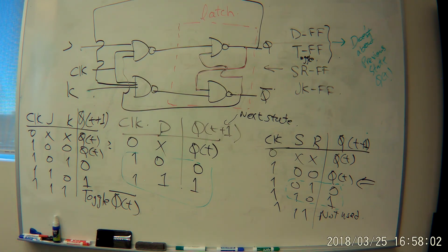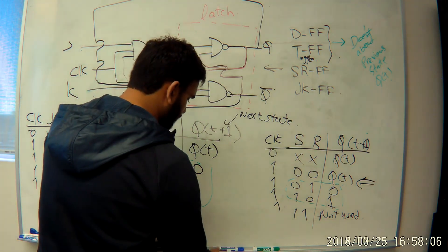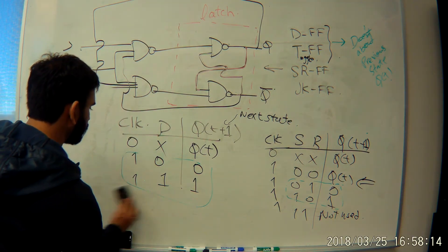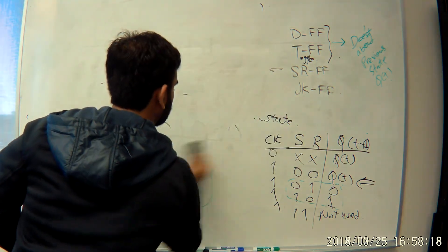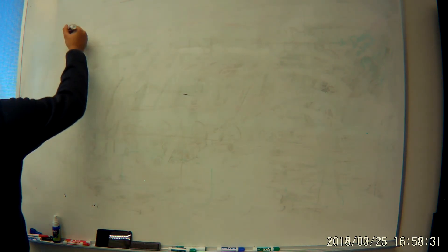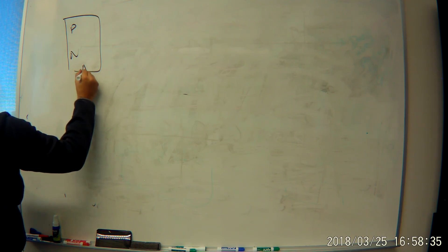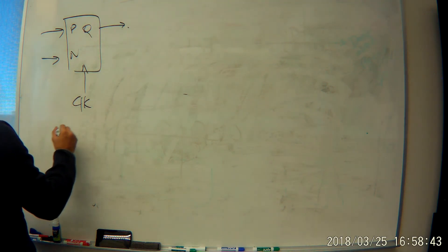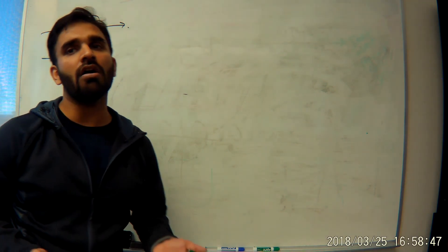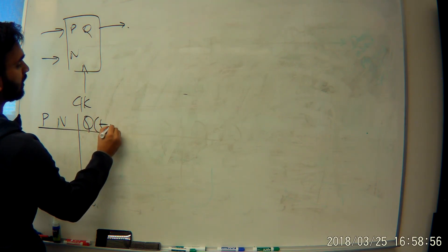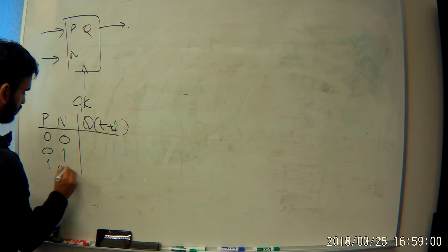Those are the basic definitions of the four common flip-flops. Let's do an example to understand it better. Let's design a custom flip-flop and call it the PN flip-flop. It has a clock, two inputs P and N, and one output. Let's build a small table to define it — since it's two bits, we have four possibilities.